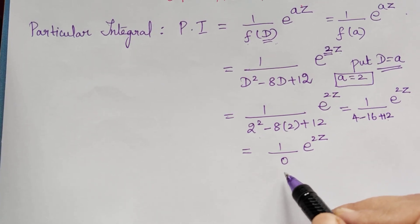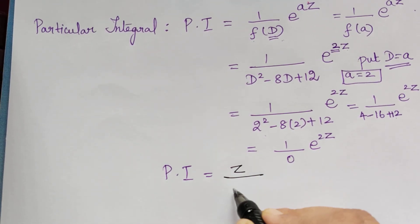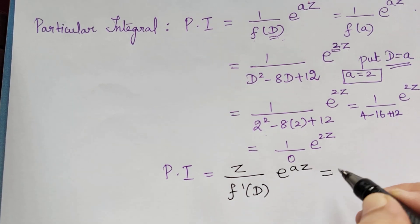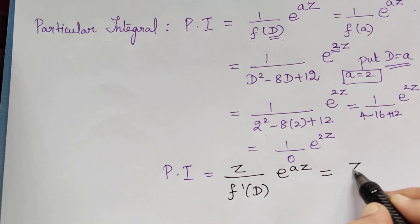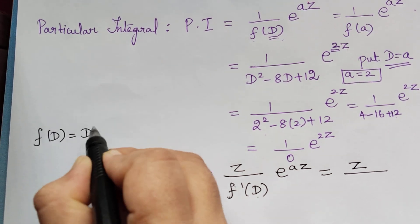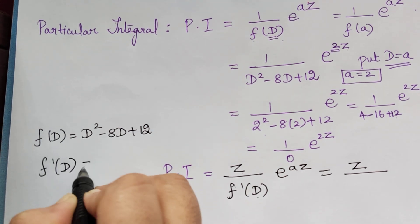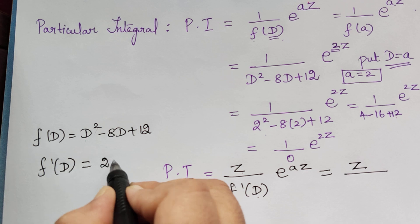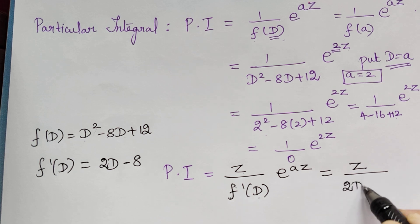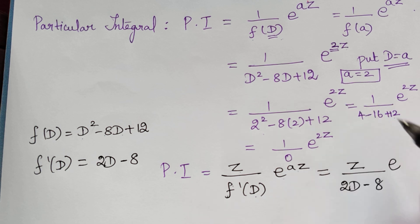In this case the particular integral becomes z/f'(D)·e^(az). We know f(D) = D² − 8D + 12, so f'(D) = 2D − 8. Therefore the particular integral equals z/(2D − 8)·e^(2z).